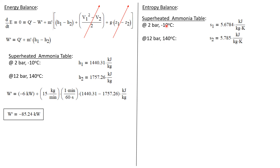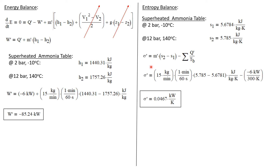Now we'll calculate the entropy production with an entropy balance. Going back to the superheated table, at state 1 — 2 bar and minus 10 degrees C — the specific entropy S1 is 5.6784 kilojoules per kilogram·K. At state 2 — 12 bar and 140 degrees C — S2 is 5.785 kilojoules per kilogram·K. Our open system entropy balance states that the rate of entropy production, sigma dot, equals M dot times the change in specific entropy, minus the summation of Q dot over T.